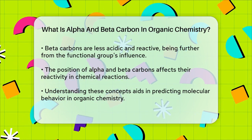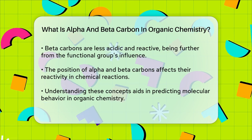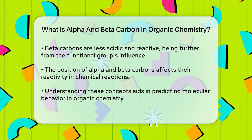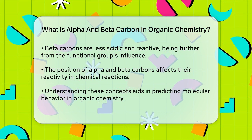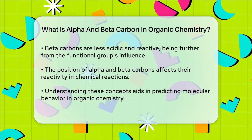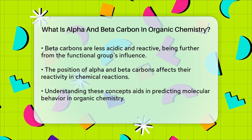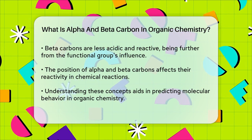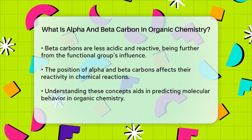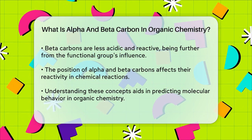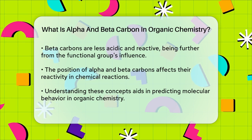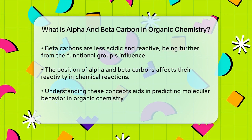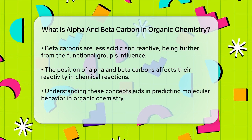In summary, understanding alpha and beta carbons is key to navigating the complex world of organic chemistry. By identifying these carbons relative to functional groups, you can predict how molecules will behave and react in different chemical environments. So next time you see these terms, you'll know exactly what they mean and how they fit into the bigger picture of organic chemistry.